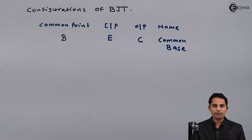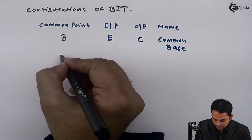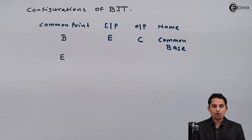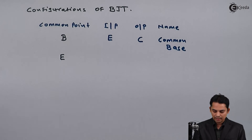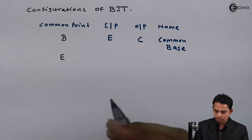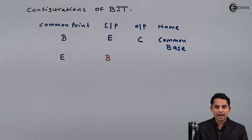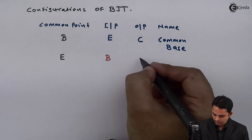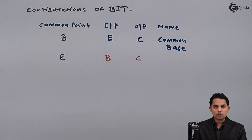In the second configuration, emitter is the common terminal. For this configuration it is straightforward to select input and output: base serves as the input and collector serves as the output. This configuration is called common emitter configuration.